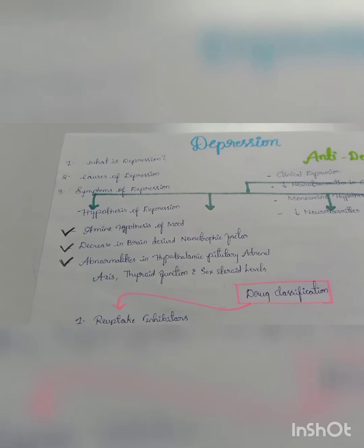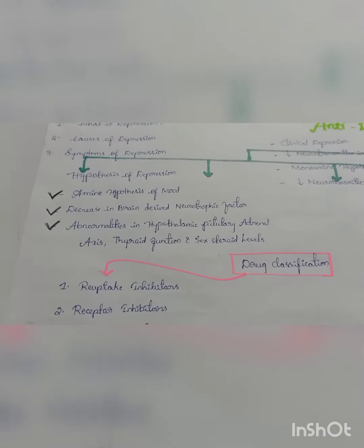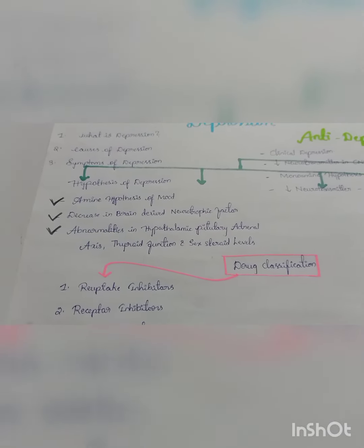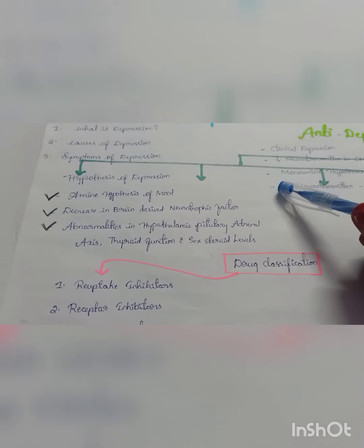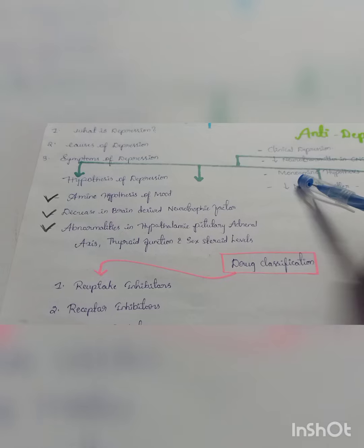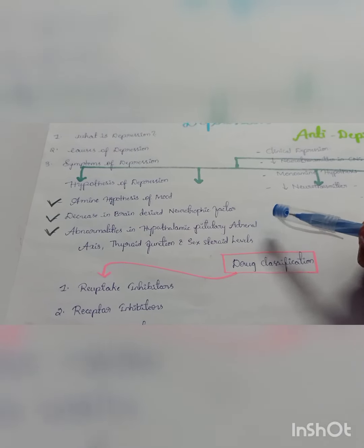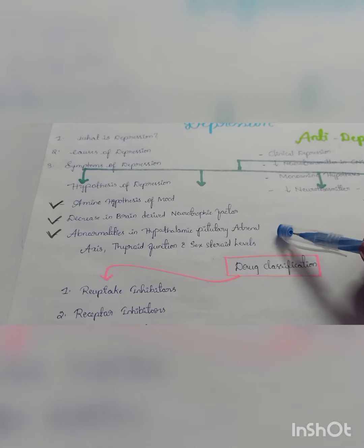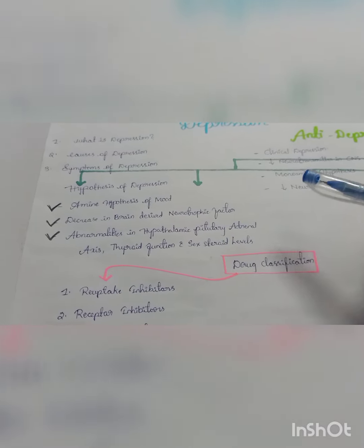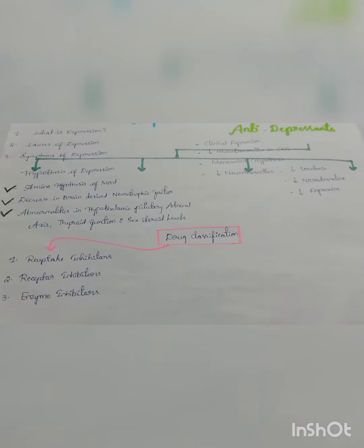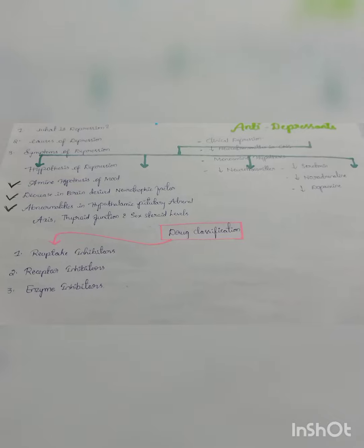Let's discuss the hypotheses of depression. There are three hypotheses: the first is the amine hypothesis of mood, the second is decrease in brain-derived neurotrophic factor, and the third is abnormalities in hypothalamic-pituitary-adrenal axis, thyroid function, and sex steroid levels. Now let's discuss the drugs used for depression — the goal is to increase the level of monoamines.